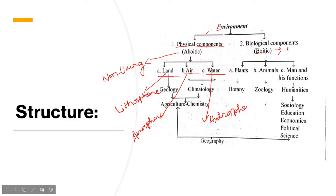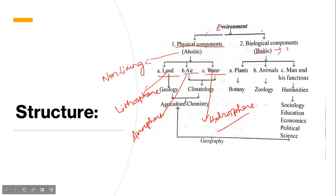These are the scientific terms used for these particular components of the environment. When we talk about lithosphere, we talk about the solid earth, the land area. When we talk about atmosphere, we talk about the air or the gaseous substances which surround us. When we talk about hydrosphere, we talk about the water components — all the water bodies from which we get water.